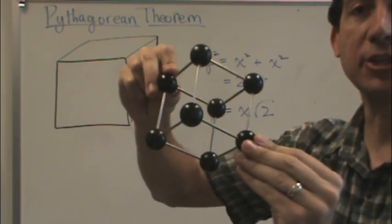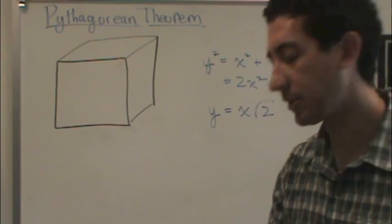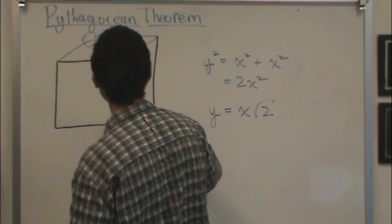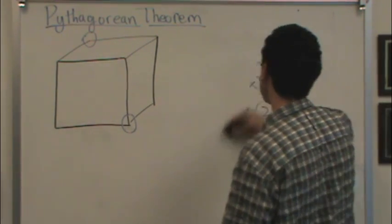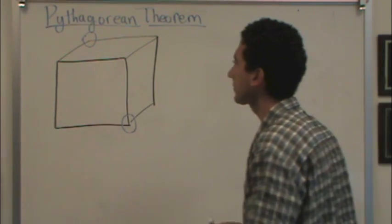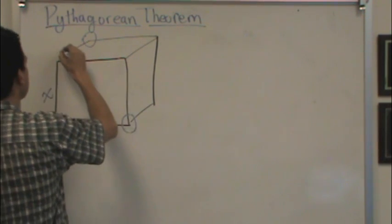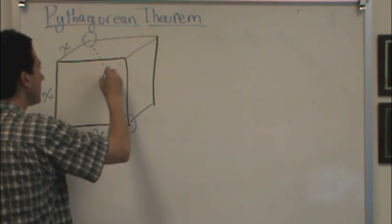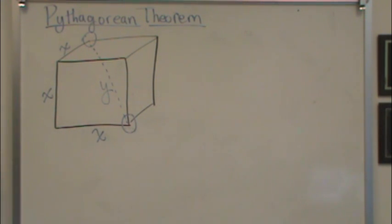I'm not interested in the face diagonal, which is what we just found, but I'm interested in the cube diagonal — the distance between my fingers. So I'm interested in the cube diagonal, the distance from here to there. We can also use Pythagorean's Theorem to determine that. Again, if the length of each side is x, so I have a perfect cube, and I want to know this distance, which we'll call y.